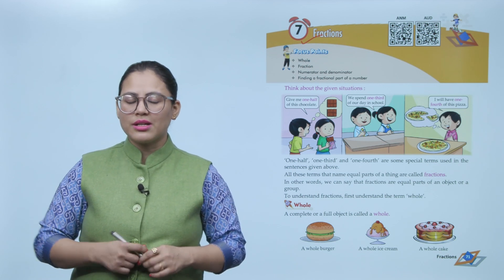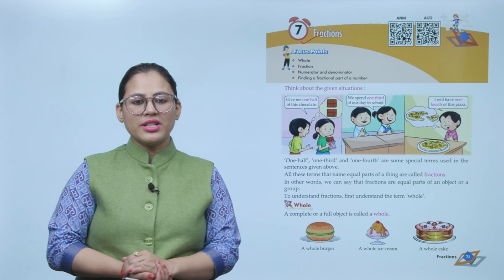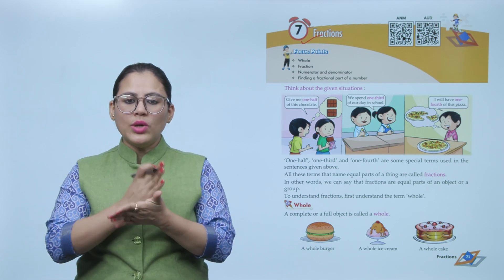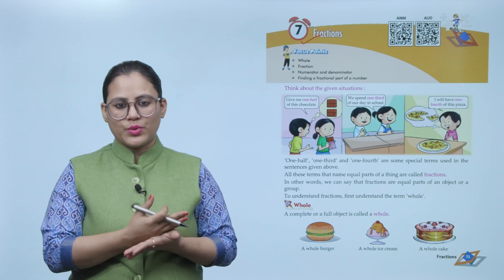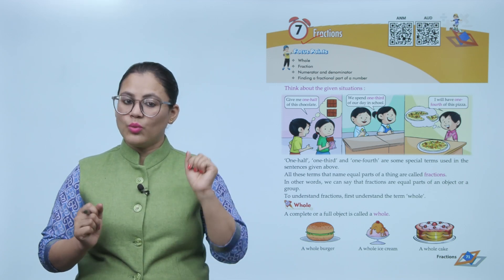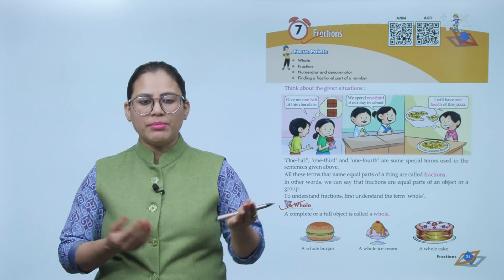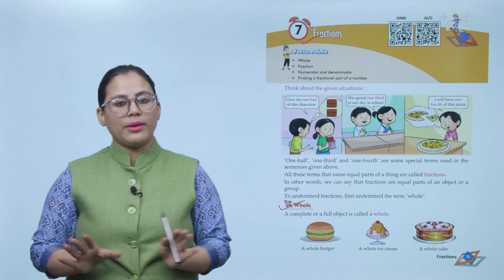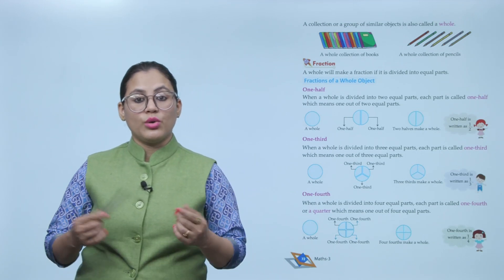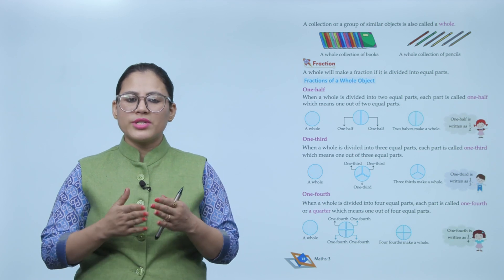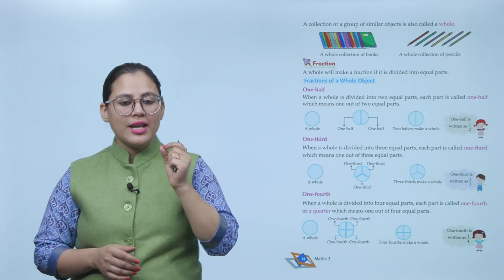To understand fractions, first understand the term 'whole.' A complete or full object is called a whole — like a whole burger, whole ice cream, whole cake. A collection or group of similar objects is also called a whole, like a whole collection of books or a whole collection of pencils.